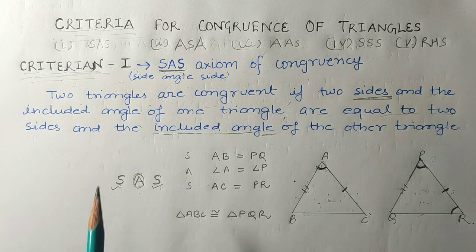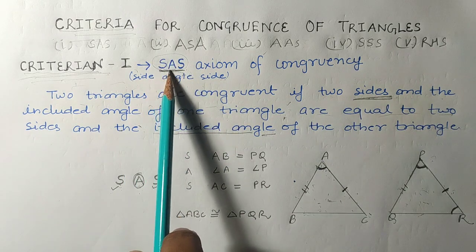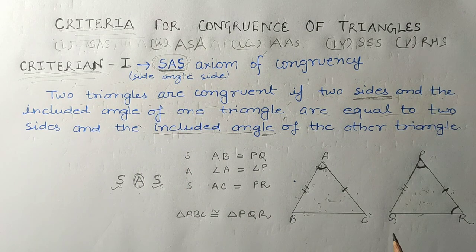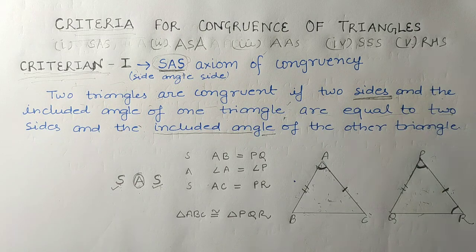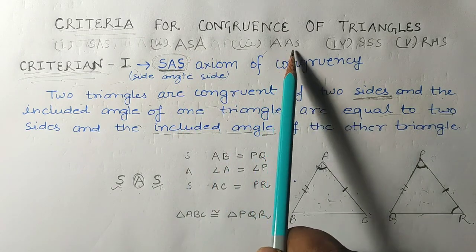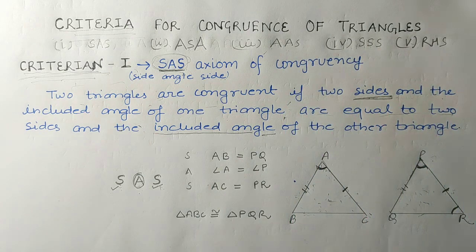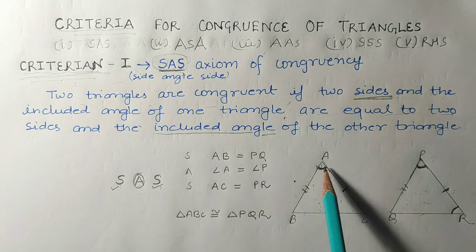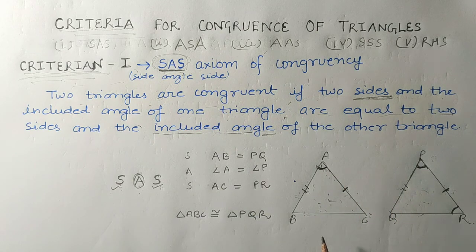The name of the criterion is very important — it defines the method by which the triangles are shown to be congruent. Side-Angle-Side means two sides and the included angle. Similarly, ASA means two angles and the included side, AAS means angle-angle then side, SSS means all sides, and RHS involves right angle, hypotenuse, and side.